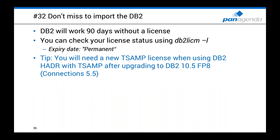Tip 32: DB2 license issues. When installing a new DB2 environment, you get a trial license valid for 90 days — after 90 days DB2 stops working because it's unlicensed. Check your environment with 'db2licm -L' to verify the expiration date. Also, for clustered DB2 environments using Tivoli TSAM scripts, you need to upgrade your licenses after updating to DB2 version 10.5 fix pack 8 (the supported version for Connections 5.5) — otherwise your cluster scripts will stop working.